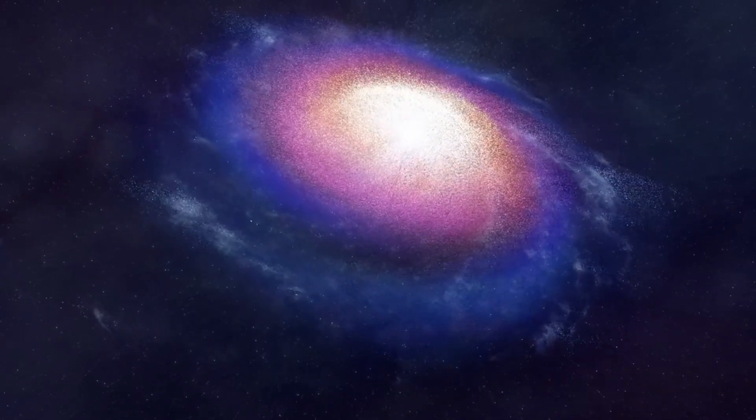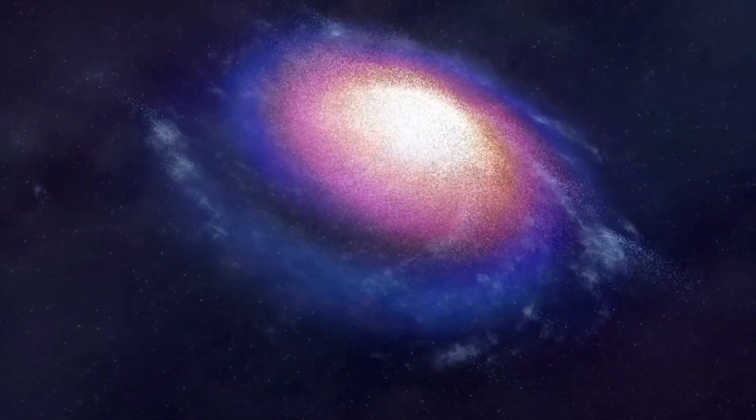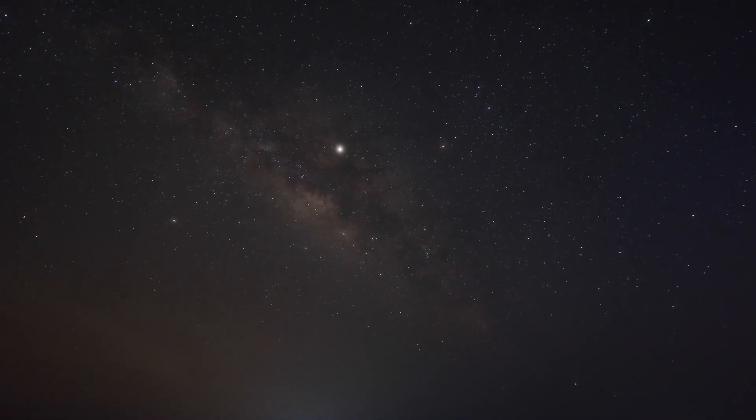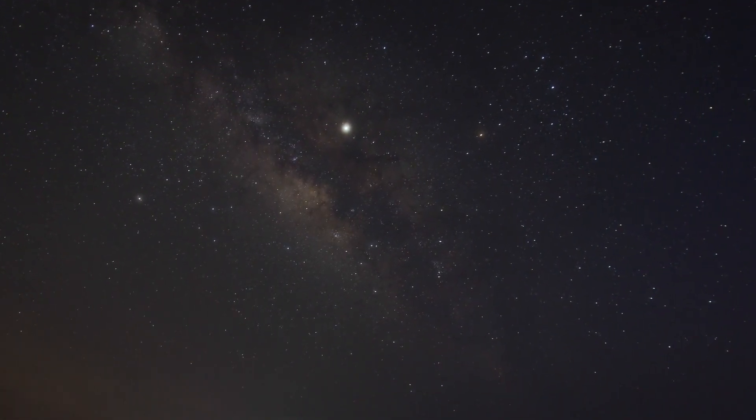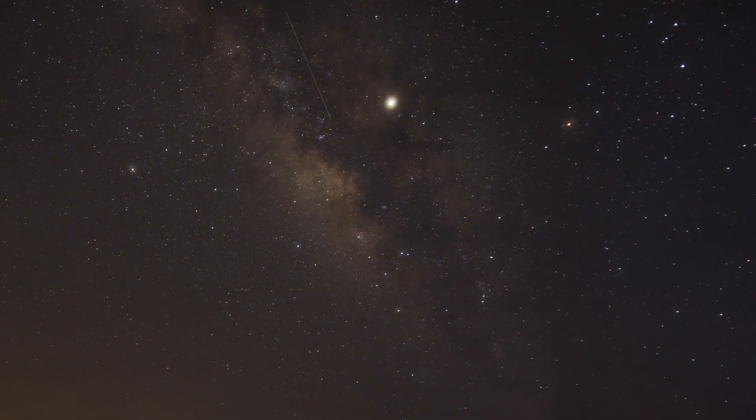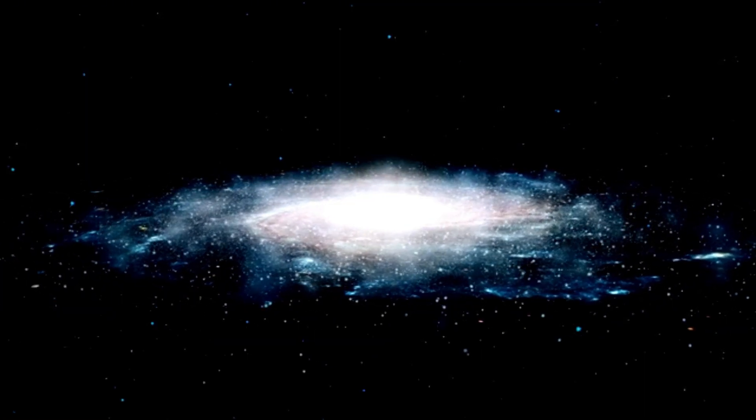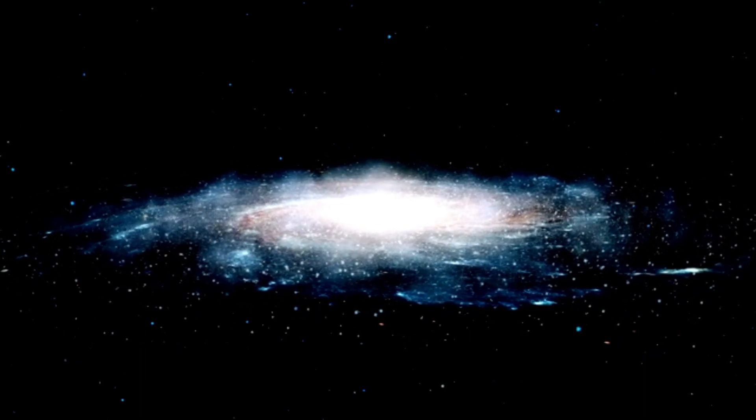alongside observations from various observatories, has shown that Betelgeuse encountered a significant mass ejection in 2019. This behavior is extraordinary for a star of its kind and has provoked the interest of cosmologists worldwide. While coronal mass ejections are a common event in our own sun, the novel occurrence seen in Betelgeuse adds an intriguing layer to our understanding of stellar life cycles and the dynamics of massive stars.